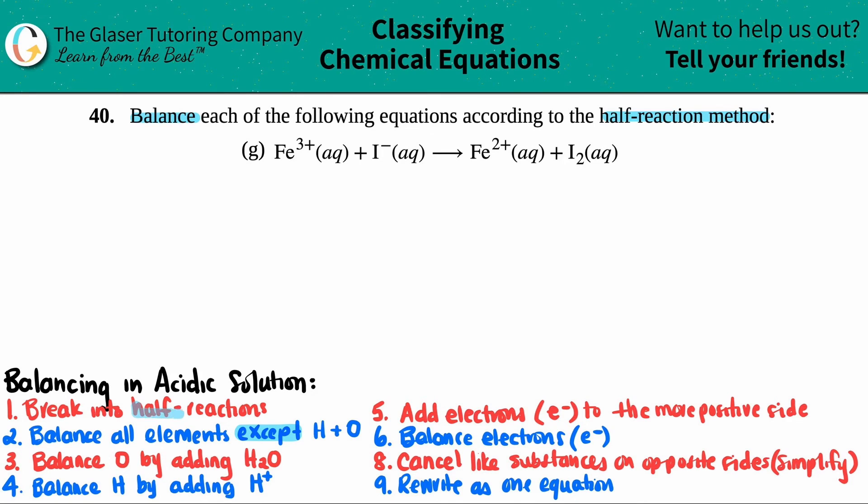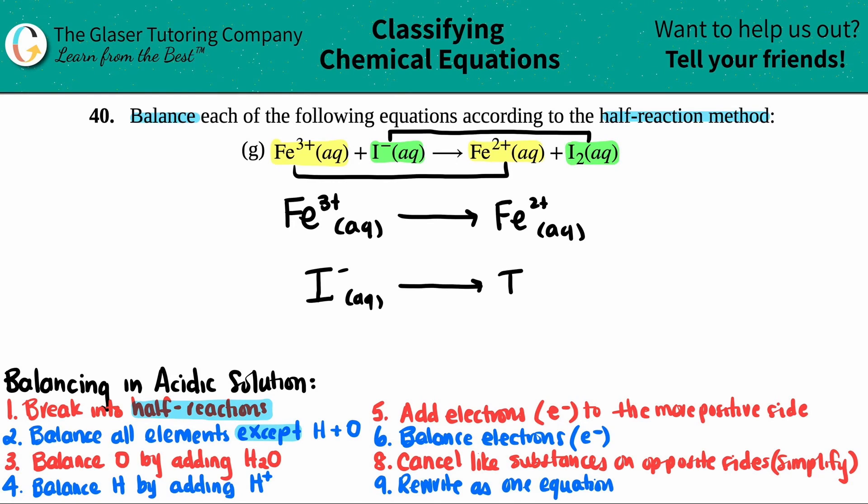So let's get started. The first thing we have to do is we have to break the equation into two half-reactions. Pick the elements that go together. My one half-reaction would be the two irons together, and the other half-reaction would be the two iodines together. So let's write them out. My first one would be Fe³⁺ aqueous, and that will yield Fe²⁺ aqueous. And then we have I⁻ aqueous, and then I have I₂ aqueous.